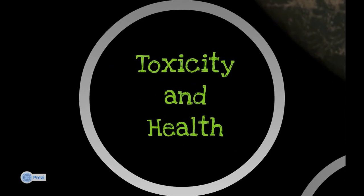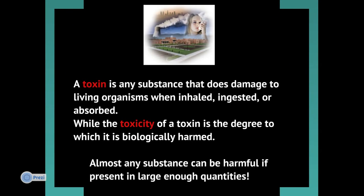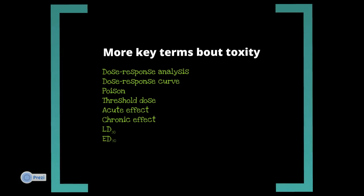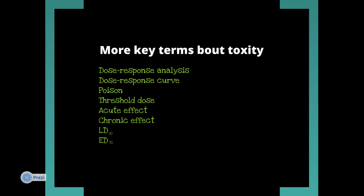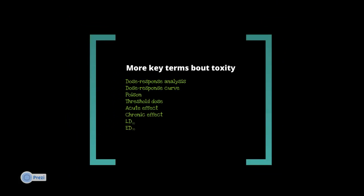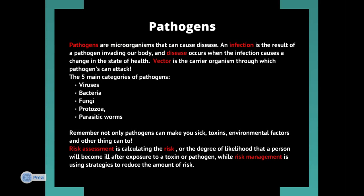So, toxicity and health. A toxin is any substance that does damage to living organisms when inhaled, ingested, or absorbed. Anything can really be a toxin — even water in large enough quantities. The toxicity of a toxin is the degree to which something is harmed. Pathogens are microorganisms that cause disease. An infection is the result of a pathogen invading our body, and disease occurs when the infection causes a change in the state of health.